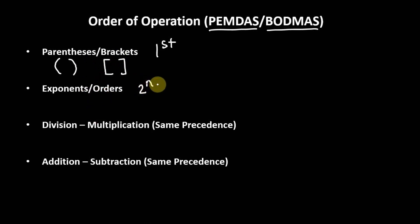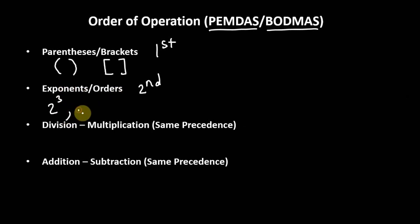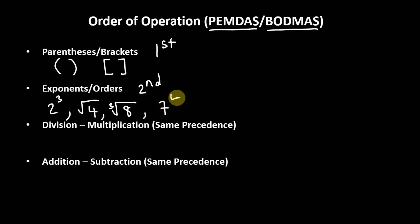Secondly, we look at exponents or others. Now what do we mean by exponents or others? For example, 2 raised to the power of 3, the square root of 4, the cube root of 8, or 7 raised to the power of 4 — all of these are examples of exponents and others. So once you have anything looking like this, we classify those as others or exponents.